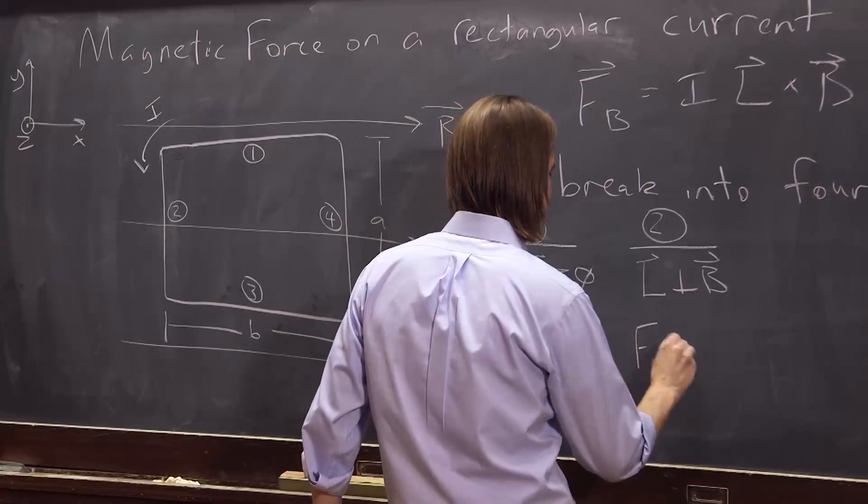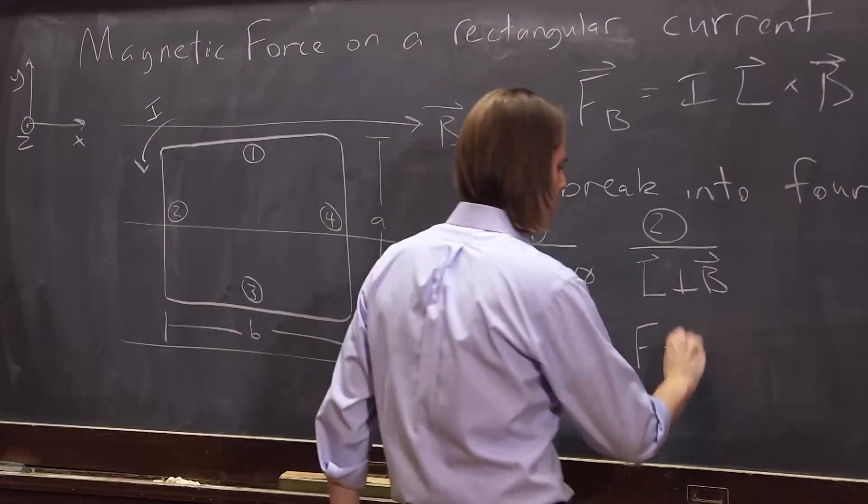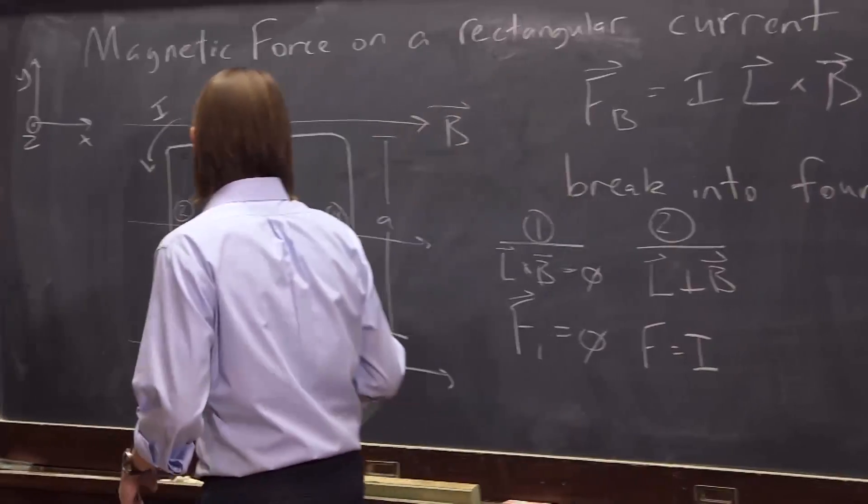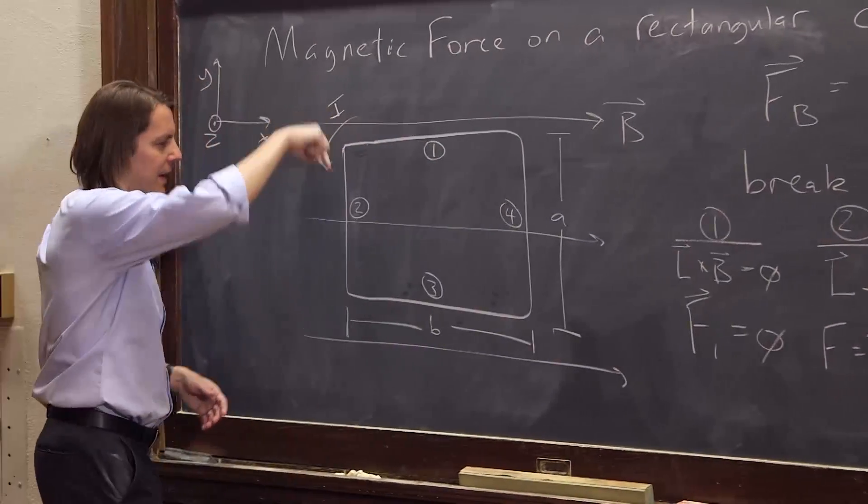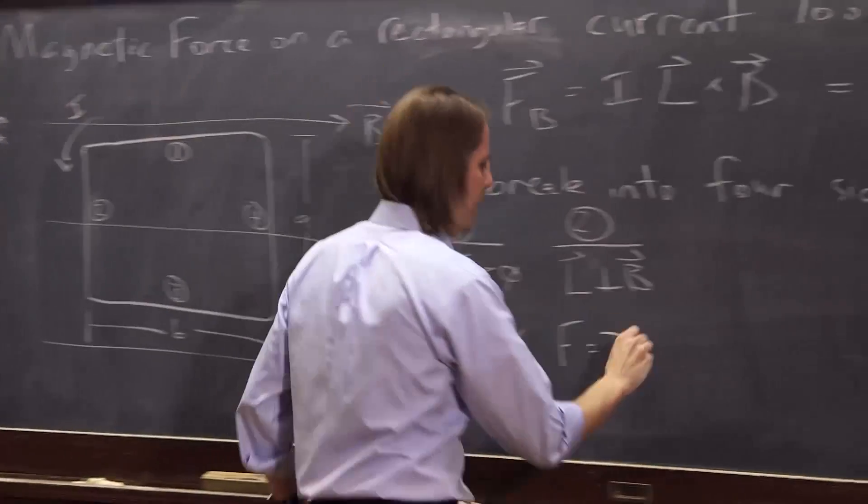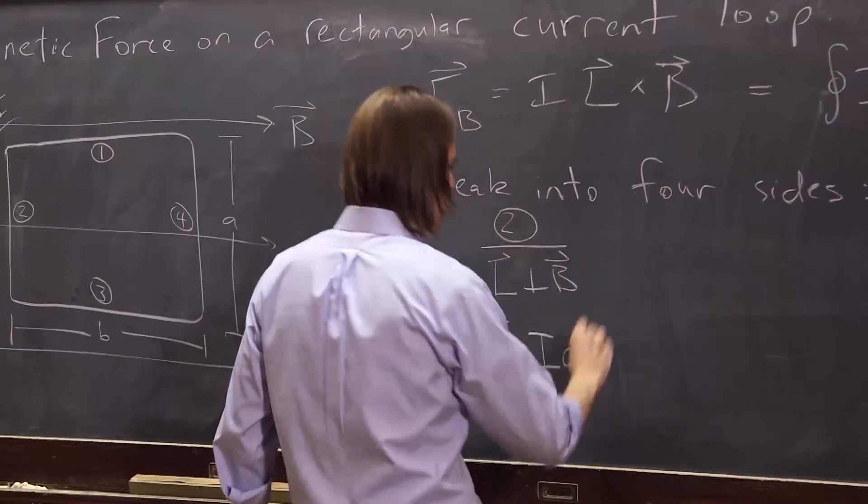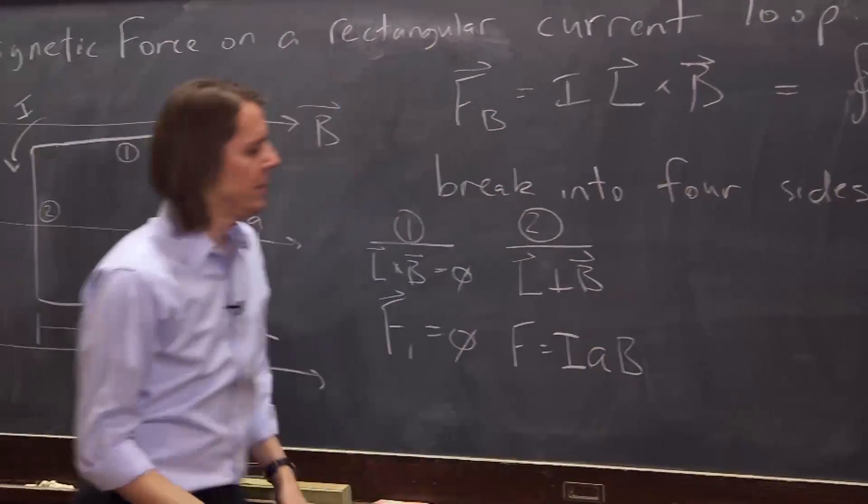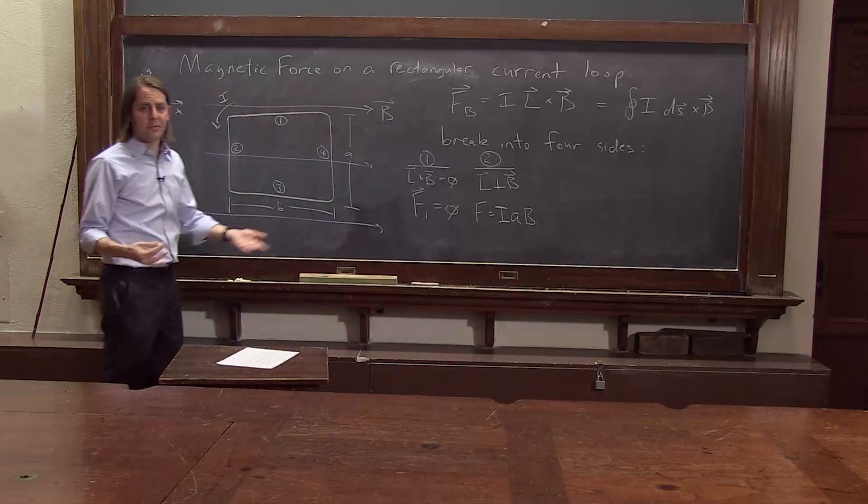So this time the force is not going to be zero. It's going to be I times the L magnitude. The L magnitude is just A, the length of the vector. A times B times the sine of the angle between them. Well, sine of 90 is one.